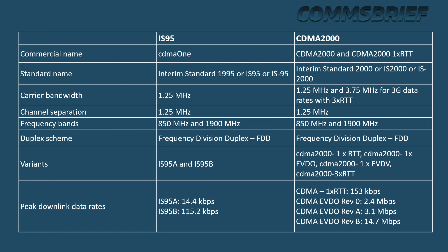The uplink in CDMA is called the reverse link, and the downlink is called the forward link. CDMA 2000 has seen several enhancements including CDMA 2000 1x EVDO, Evolution Data Optimized; CDMA 2000 1x EVDV, Evolution Data and Voice; and CDMA 2000 3x RTT, which uses 3 carriers. 1x RTT can support peak data rates of 153 kbps in both the downlink and uplink, meaning 1 carrier of 1.25 MHz is used.